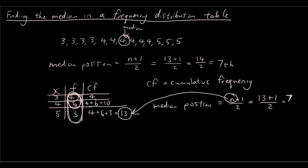So where is the median on our frequency distribution table? What you have to do is look at the cumulative frequency column and find the first number that is bigger than 7. This number is 4, which is smaller than 7, and then this number here is 10, which is bigger than 7. So that means this second row is our median.